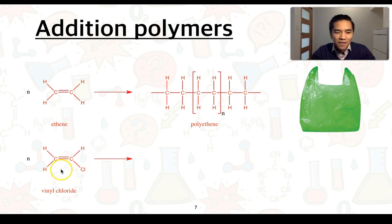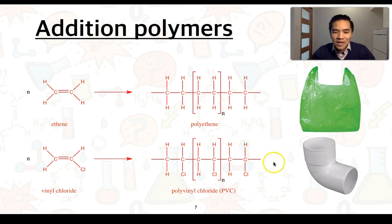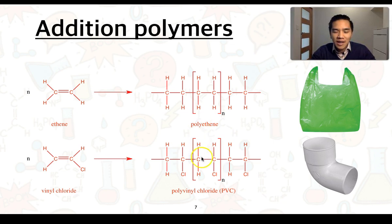The second example is vinyl chloride, which has a carbon-to-carbon double bond with a chlorine atom bonded to one of the carbons. In this addition polymerization, one bond within the double bond breaks, and successive monomer units add across in a chain reaction. The resulting polymer has two carbon atoms per repeating unit, similar to polyethene, and is commonly referred to as PVC — polyvinyl chloride — which is typically used in piping and plumbing.